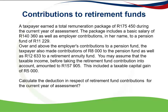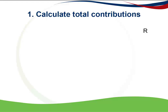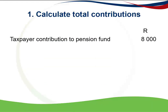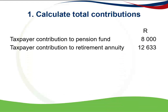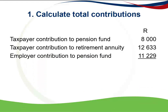The question asks us to calculate the deduction in respect of retirement fund contributions for the current year of assessment. The first thing we need to do is calculate the total contributions the taxpayer would like to deduct. The taxpayer contributed R8,000 to a pension fund, R12,633 to a retirement annuity fund, and the employer contributed R11,229 to the pension fund, giving total contributions of R31,862.